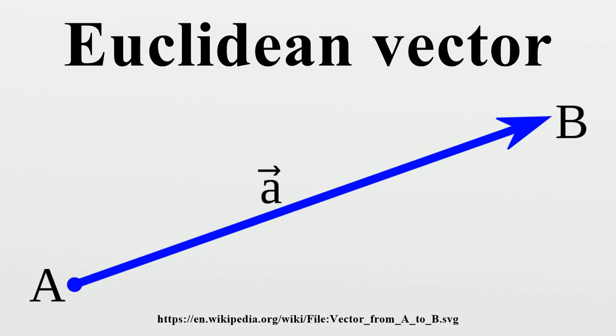A Euclidean vector is frequently represented by a line segment with a definite direction, or graphically as an arrow, connecting an initial point A with a terminal point B. A vector is what is needed to carry the point A to the point B.